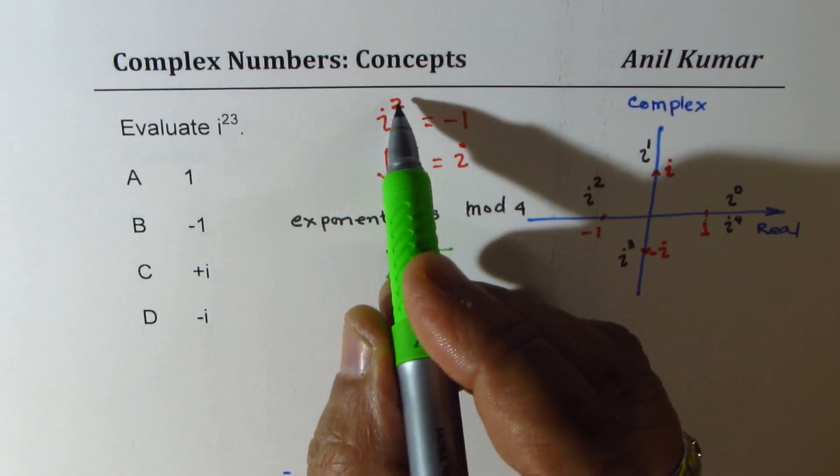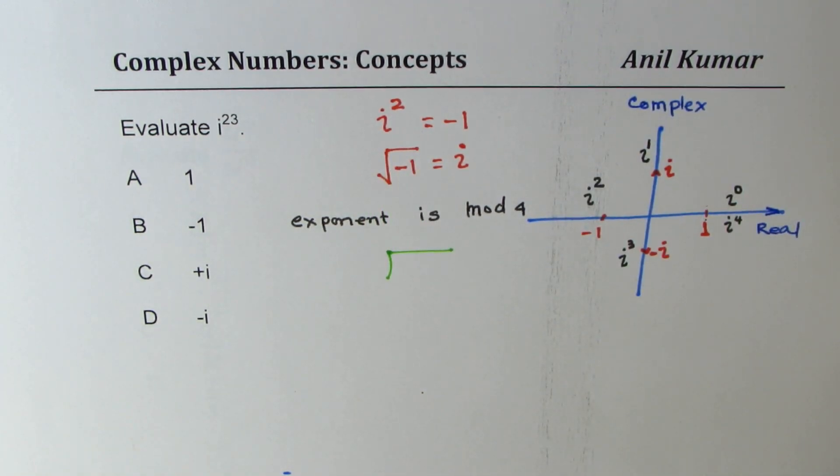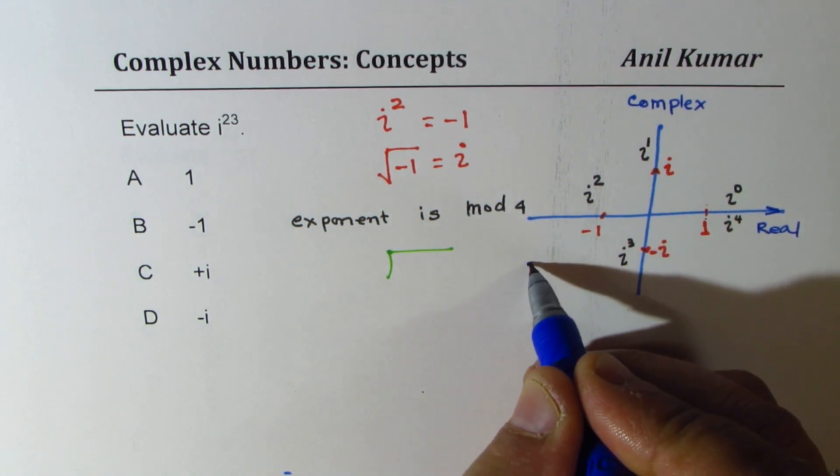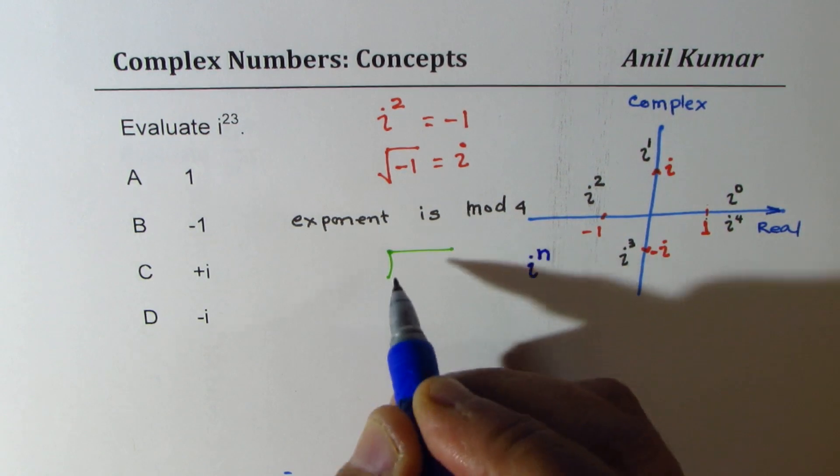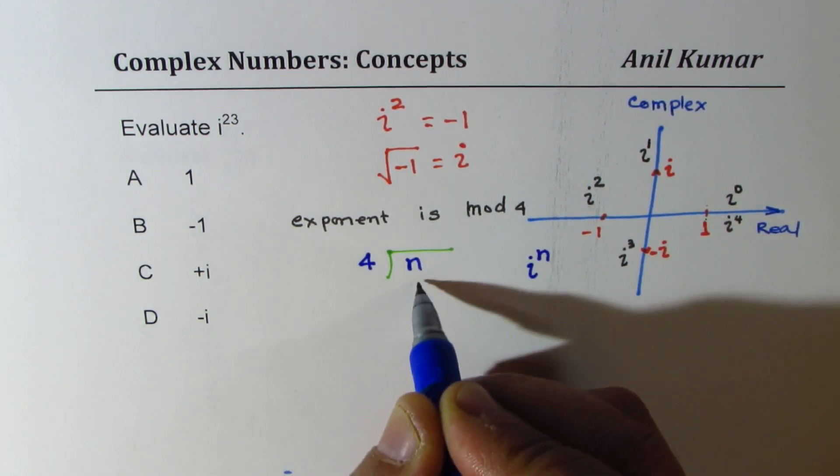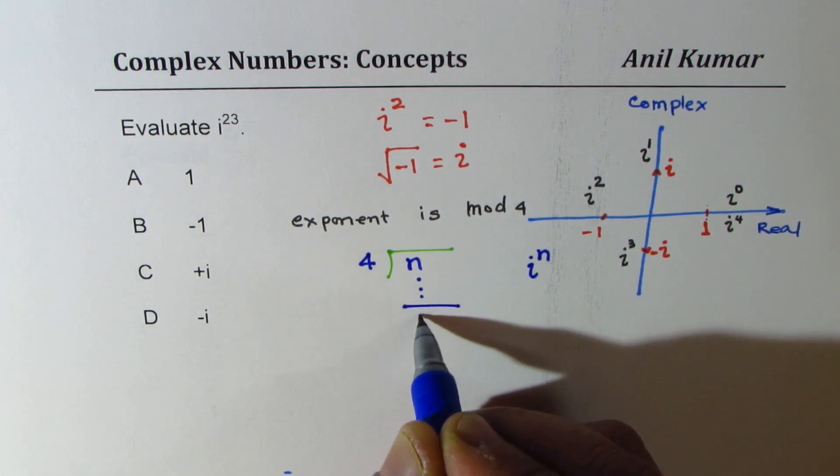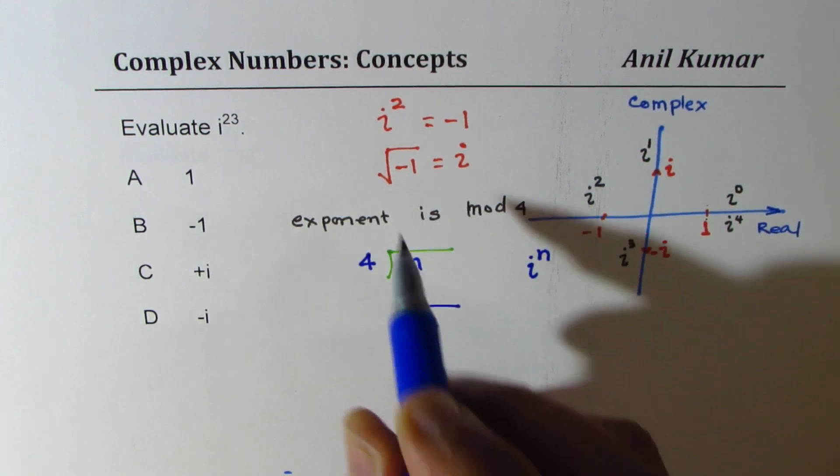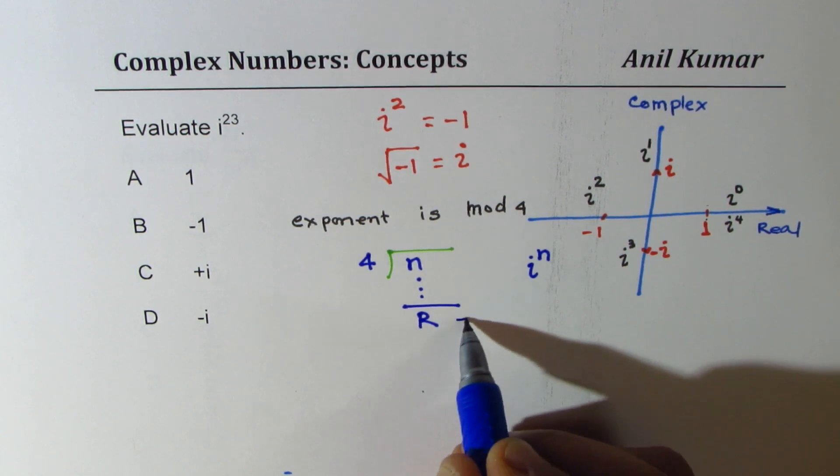Now that means you need to divide the number by 4. So if we write something like i to the power of n, then you have to divide n by 4. Whatever you get as the remainder, that is the final exponent.